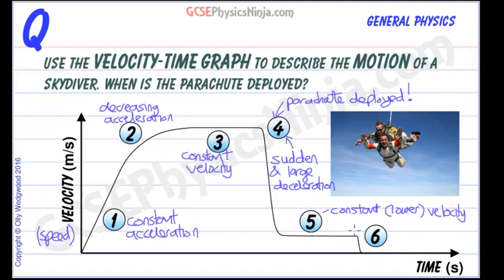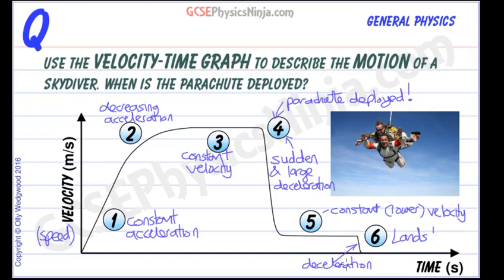Finally at six the parachutist touches down and lands. There's another little deceleration there, and at this point the skydiver is now stationary.